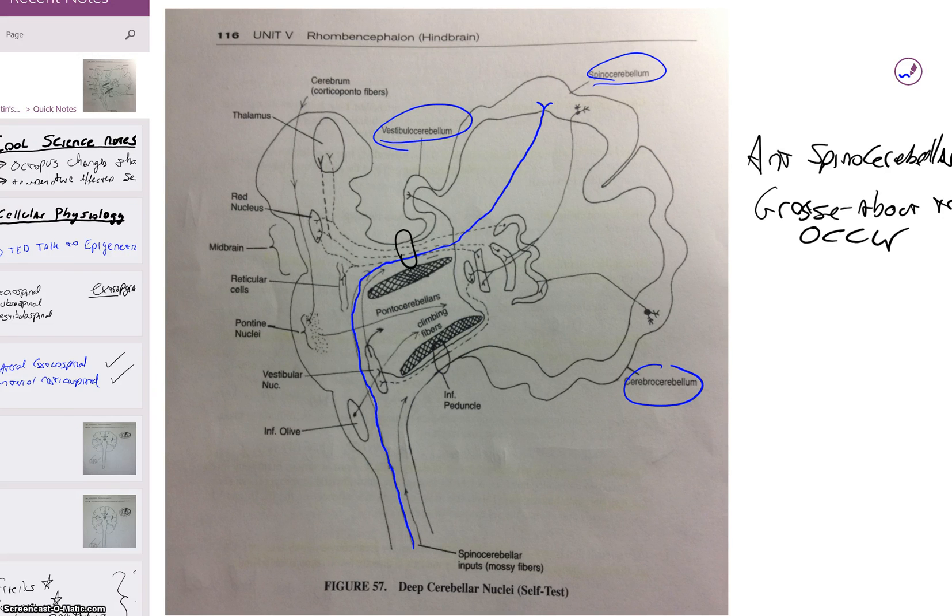Remember the two fibers entering the cerebellum are either mossy or climbing. So we need to classify this as either mossy or climbing. It's easy to do because the climbing fibers are always going to start in the inferior olive. Anything not originating in the inferior olive is going to be a mossy fiber. So the anterior spinocerebellar is mossy.